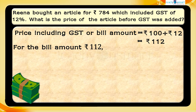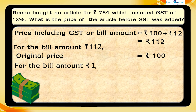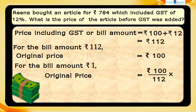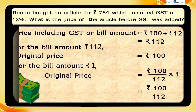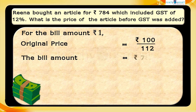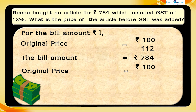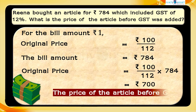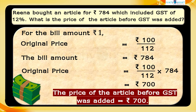For a bill amount of 112 rupees, the original price is 100 rupees. So for a bill amount of 1 rupee, the original price is 100 ÷ 112. Here the bill amount is 784 rupees, so the original price is (100 ÷ 112) × 784 = 700 rupees. Therefore, the price of the article before GST was added is 700 rupees.